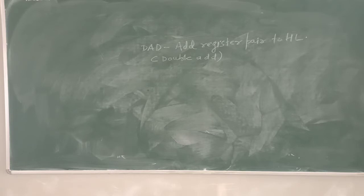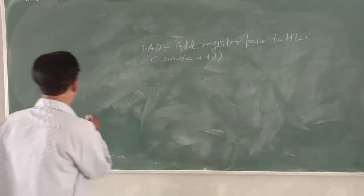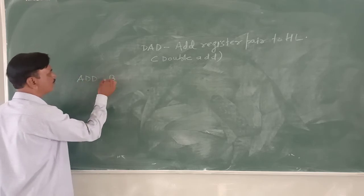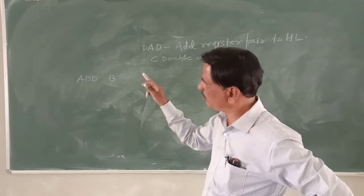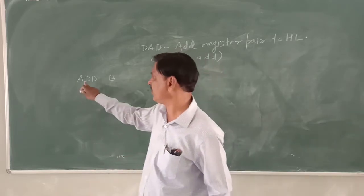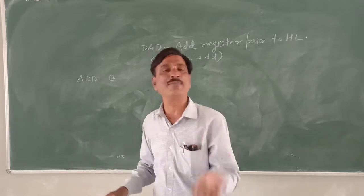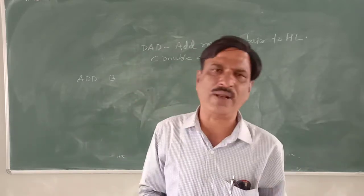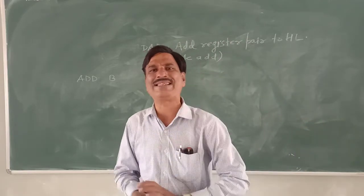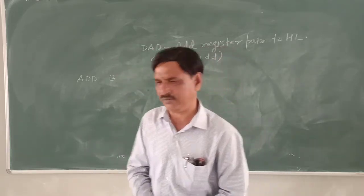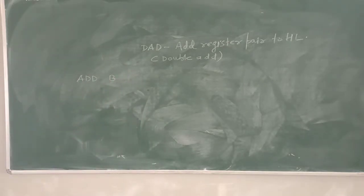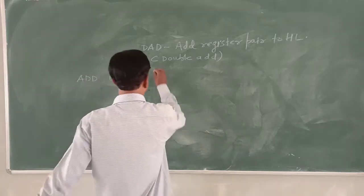When we have seen the ADD instruction — for example, ADD B — that instruction adds the contents of register B with the contents of the accumulator. In ADD, the accumulator is implicit and register B is explicit. Both accumulator and register B are 8-bit registers. So the ADD instruction performs 8-bit unsigned binary addition. Then what is DAD? DAD is a double add. What is the difference between ADD and DAD?